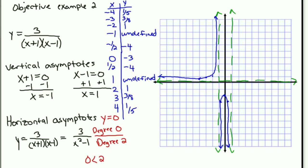And on the other side of our asymptote, we'll have 2, 1, 3, 3 eighths, 4, 1 fifth. And again, we can draw a curve to almost near our asymptotes. So there's the graph of y equals 3 over x plus 1 times x minus 1.